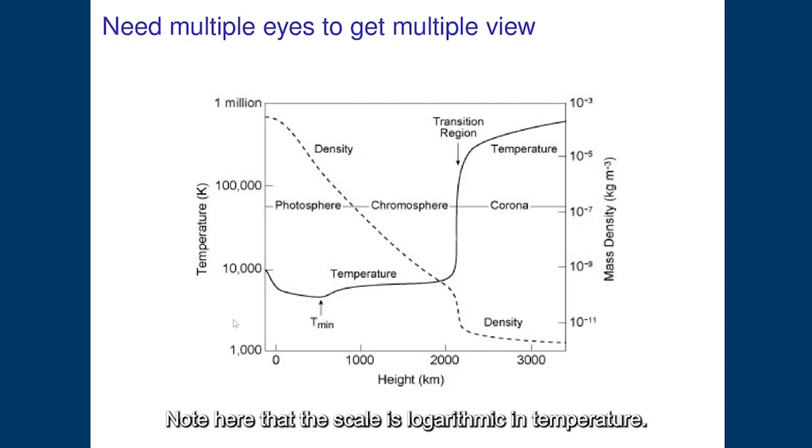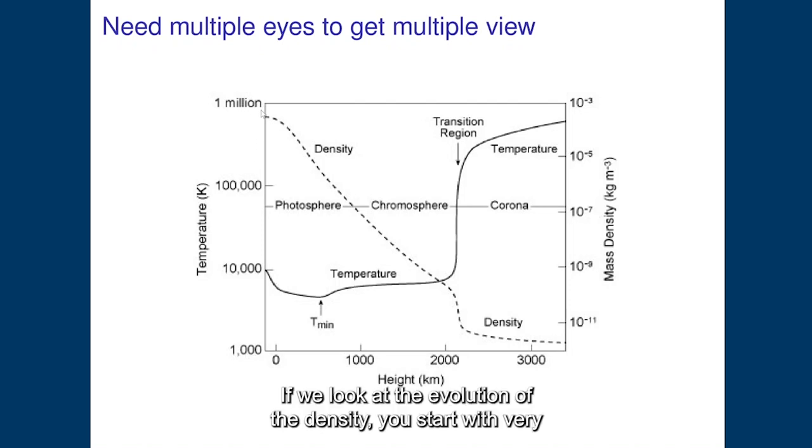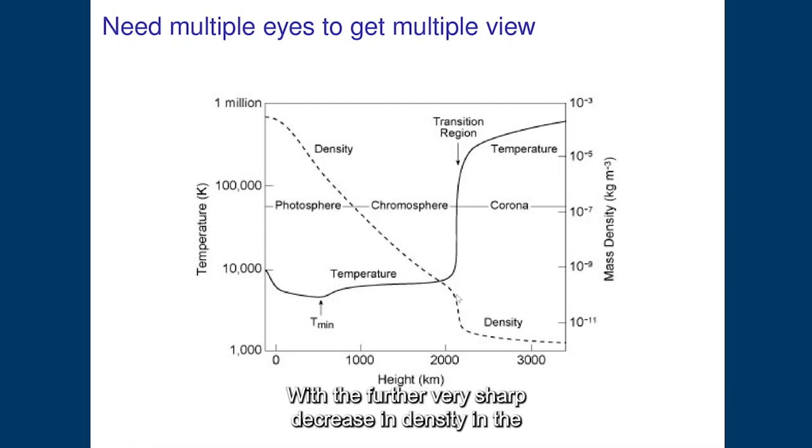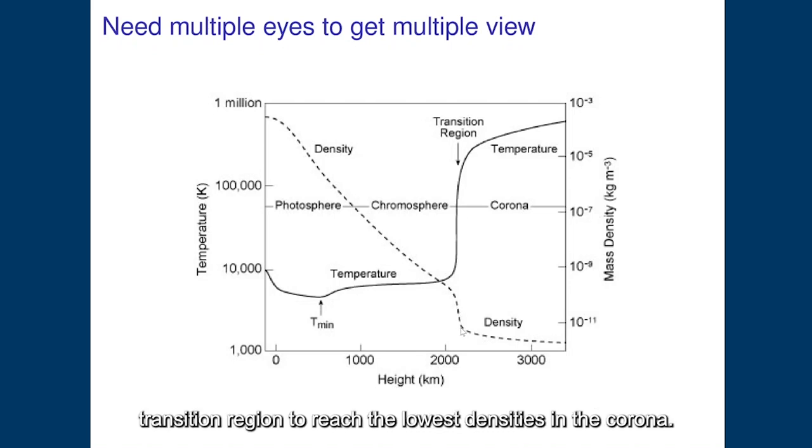Note here that the scale is logarithmic in temperature. If we look at the evolution of the density, you start with a very dense plasma at the level of the photosphere and the density continuously decreases throughout the chromosphere with a further very sharp decrease in density in the transition region to reach the lowest densities in the corona.